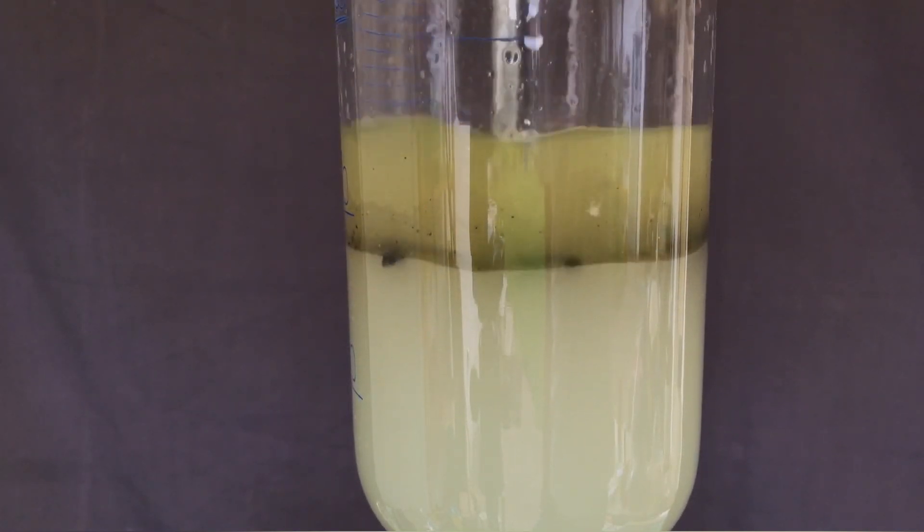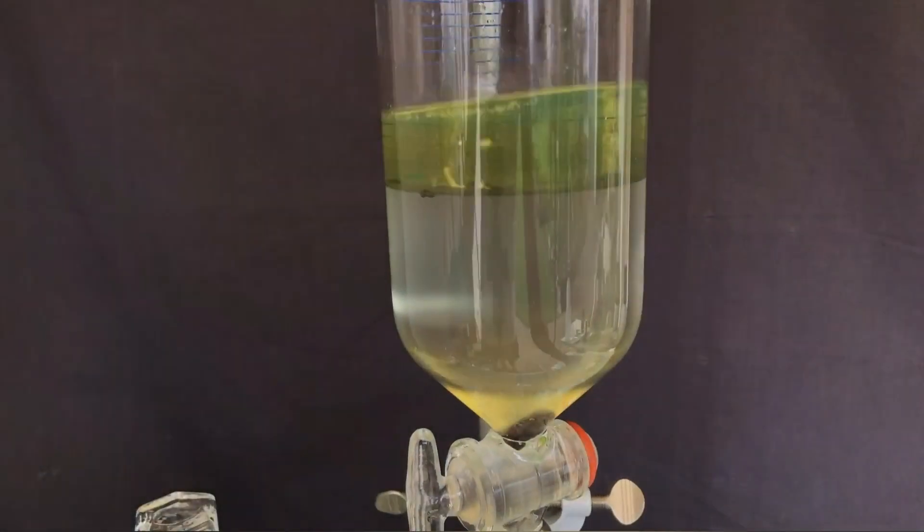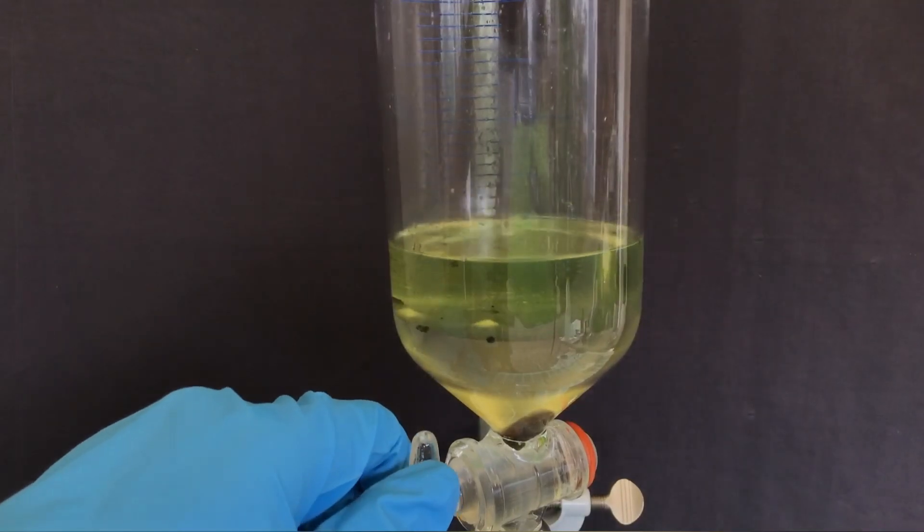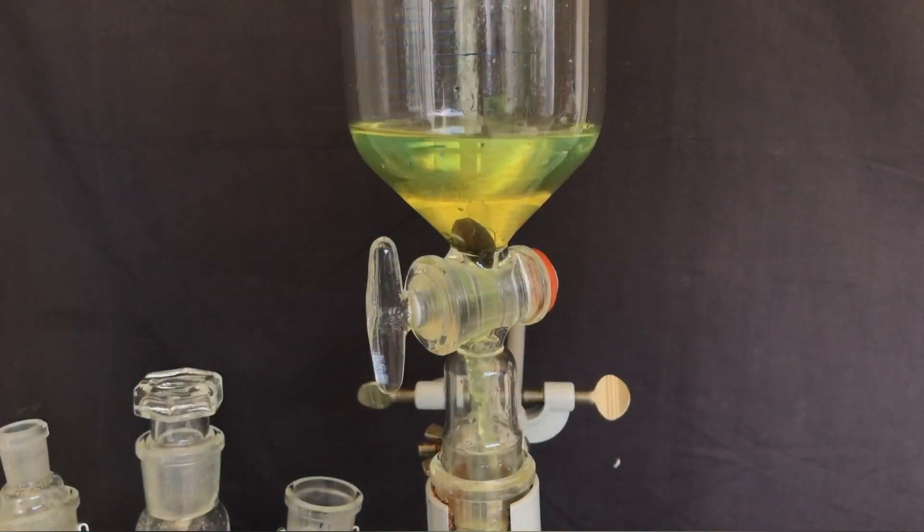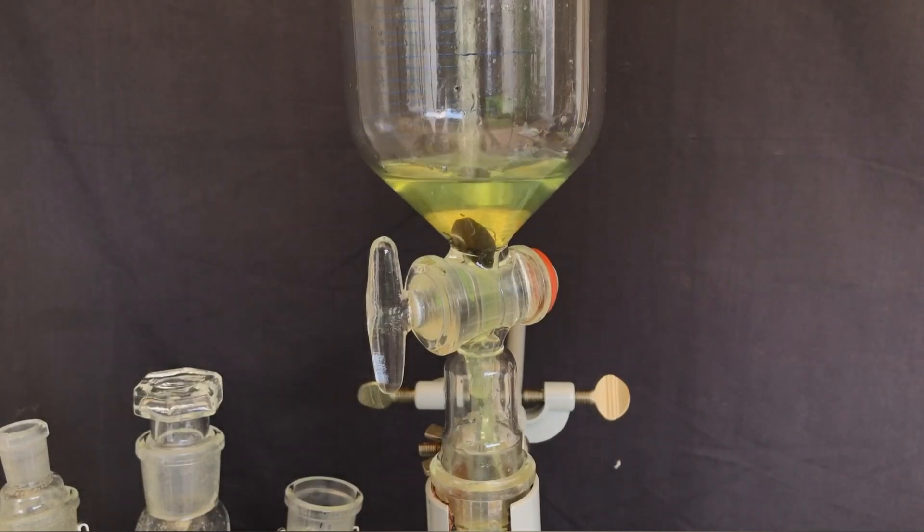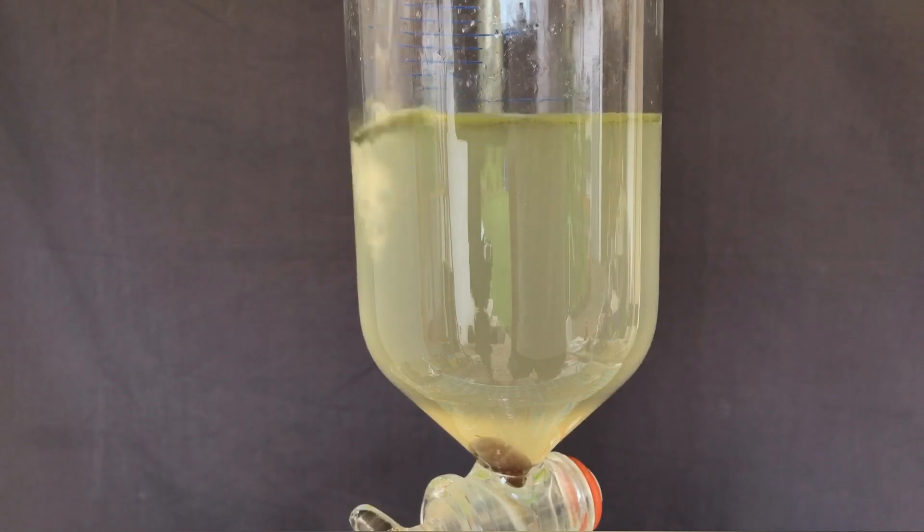After keeping the ether layer in a separate flask, we decided to get more product out of the aqueous layer. Therefore, we added 100 milliliters of ether, shook the funnel, drained off the aqueous layer again and added the ether layer to a different flask. You don't even want to know about the smell. We did this in a very well-ventilated area, but everything smelled like ether.